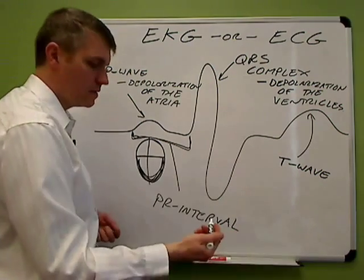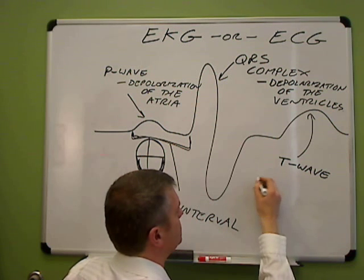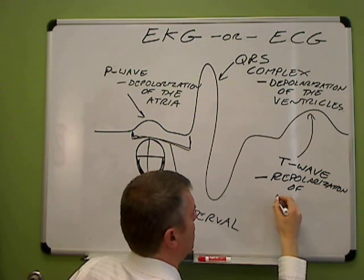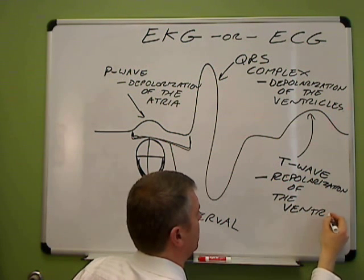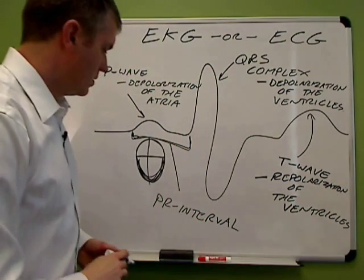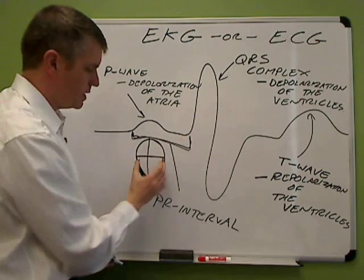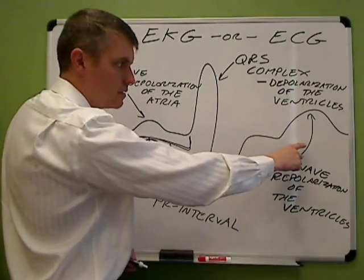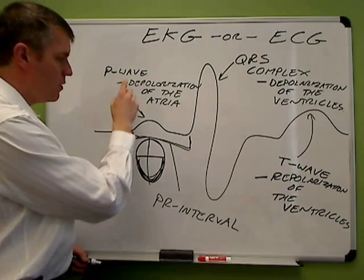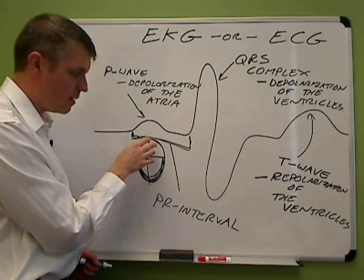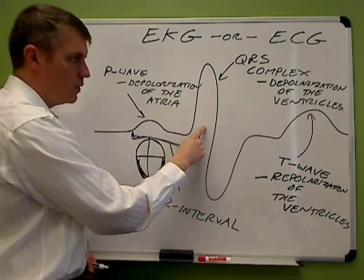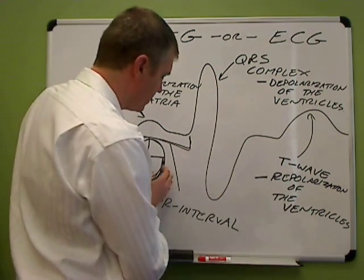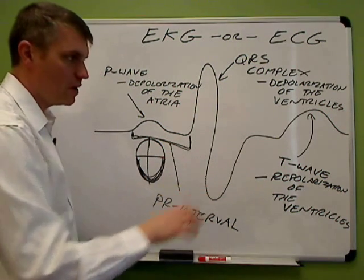The last wave is the T wave, and that represents repolarization of the ventricles. So this big, thick bottom part of the heart — in the QRS complex it depolarized and contracted, and then at the T wave it repolarizes and relaxes. To go through it one more time: P wave is depolarization of the atria, the top of the heart. QRS complex is depolarization of the ventricles — the bottom of the heart depolarizes and contracts. And then the T wave is repolarization of the bottom of the heart, the relaxation of the ventricles. That's what each part of the EKG represents.